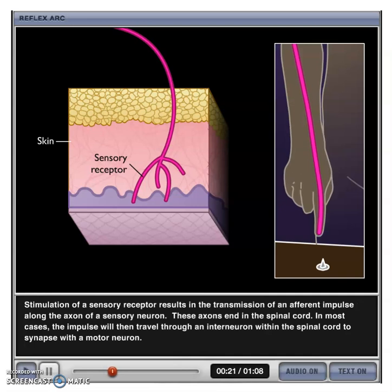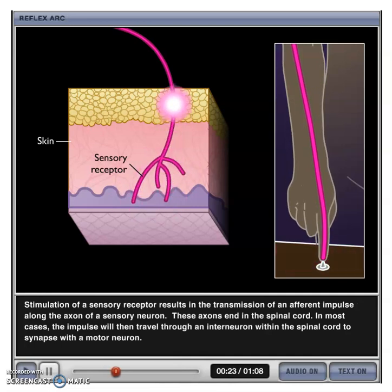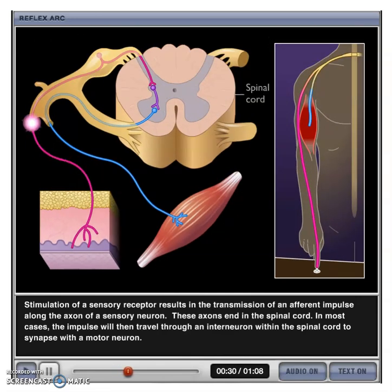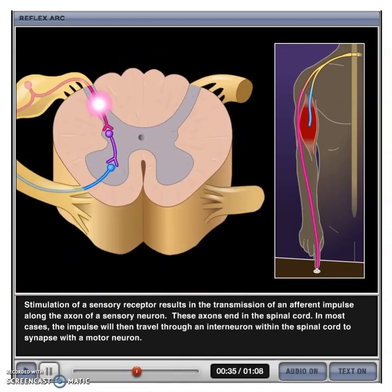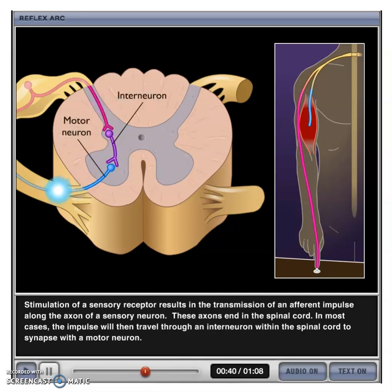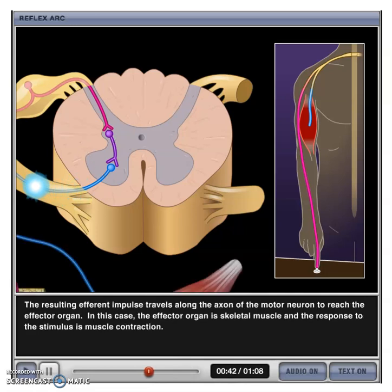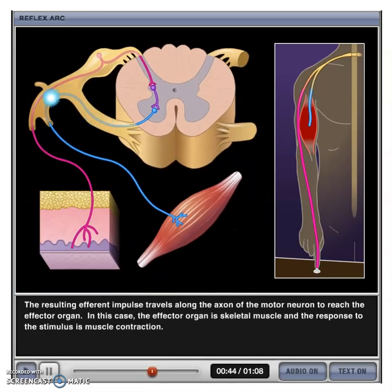Stimulation of a sensory receptor results in the transmission of an afferent impulse along the axon of a sensory neuron. These axons end in the spinal cord. In most cases, the impulse will then travel through an interneuron within the spinal cord to synapse with a motor neuron. The resulting efferent impulse travels along the axon of the motor neuron.